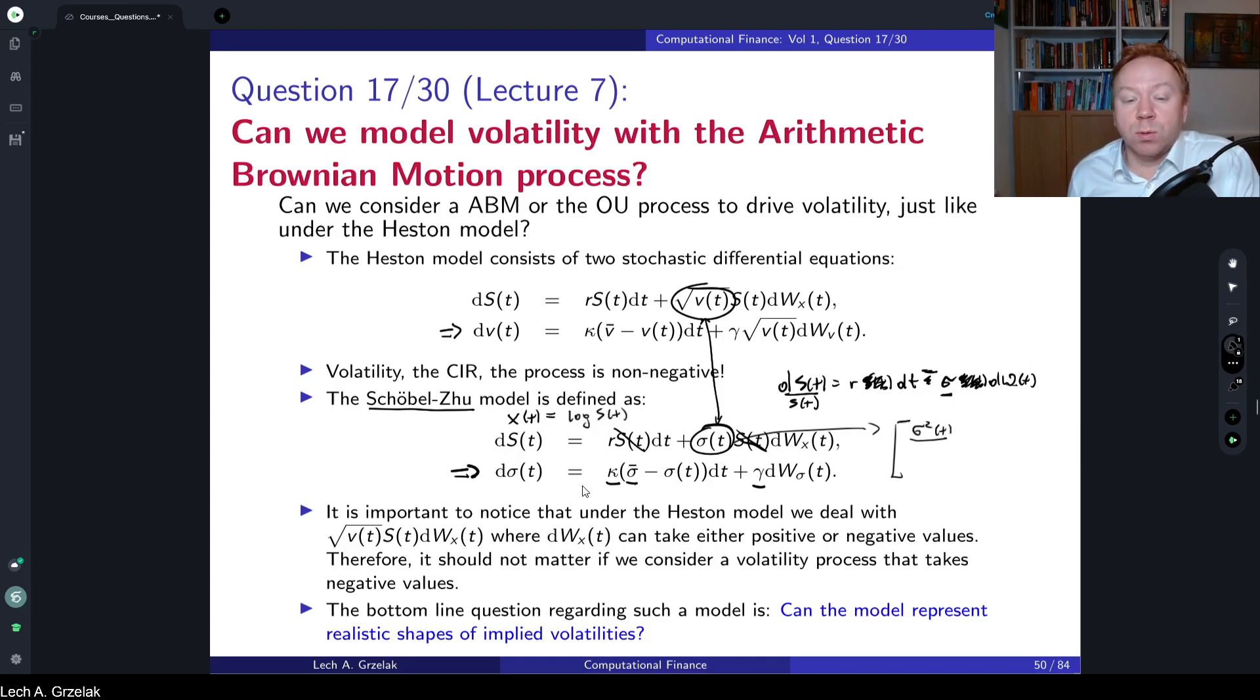However, what Schöbel-Zuh has found is that this model is not affine in this way. However, if we would define a new variable V_t equal to sigma squared, and then if we applied Itô formula to find the dynamics of this process, then this quantity can be replaced by this new variable V_t, and then it becomes affine.